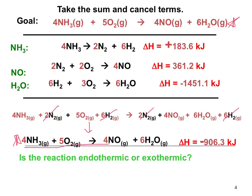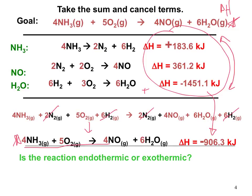Now that we have the overall equation and the thermochemical equations do in fact sum to it, we can use the summation of all the delta H values we've calculated to give the new delta H for this specific reaction. We did all the flipping and multiplying discussed earlier, cancelled everything out, and confirmed it matches the overall equation. Remember to pay attention to states of matter — if they're not in the correct phase, you don't have the equation you need. Then we sum the stepwise delta H values to give the overall delta H.